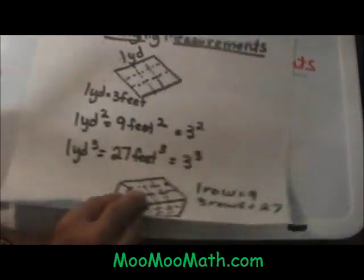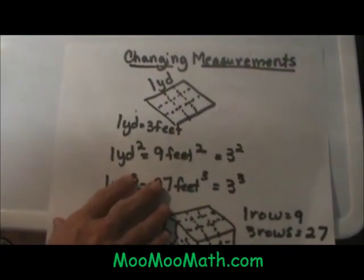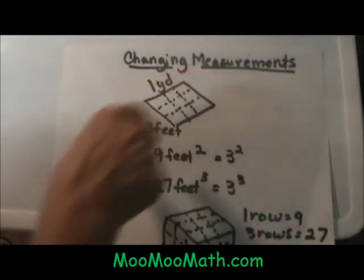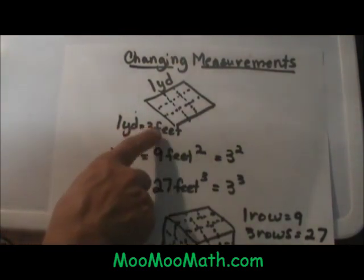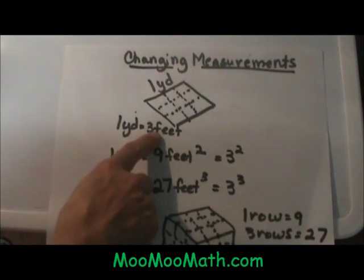Let's look at an example of what I am talking about. Let's say that you have a rug that is 1 yard by 1 yard, or 1 square yard. Remember that 1 square yard is just 3 feet on each side.